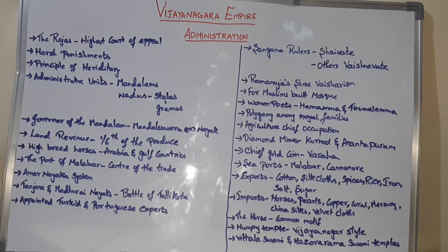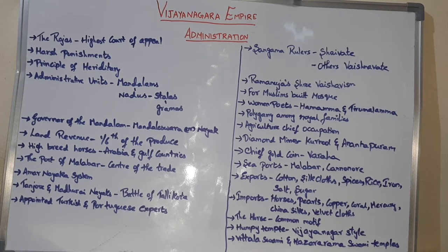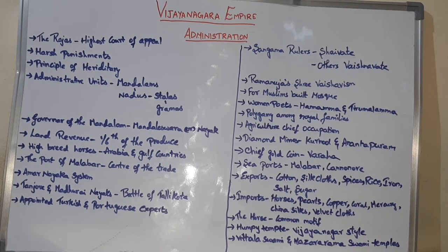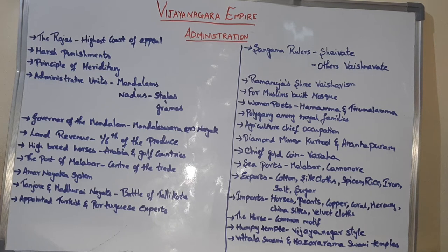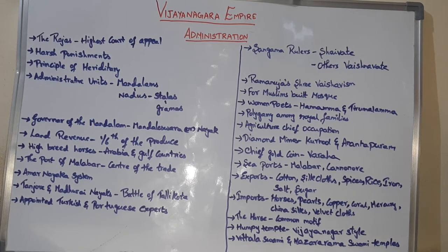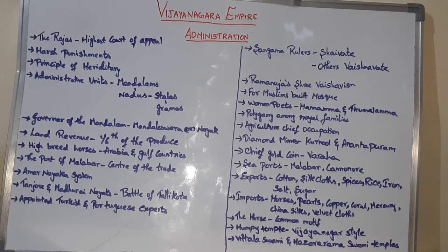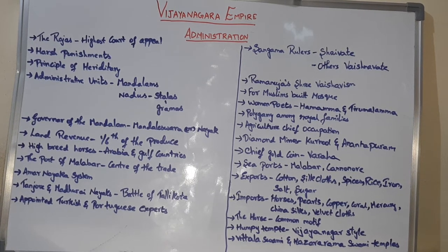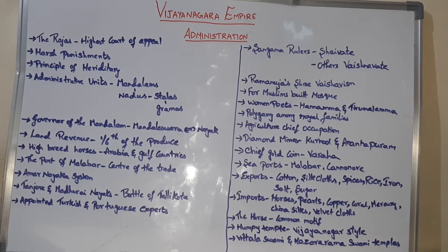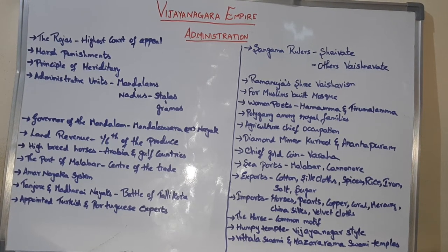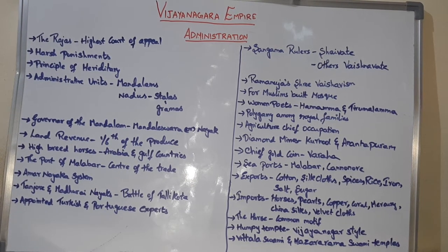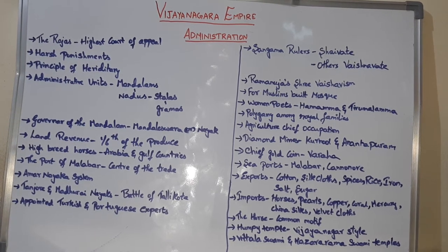The Raja enjoyed absolute authority in executive, judiciary, and legislative matters. The Raja was the highest court of appeal. In Vijayanagara, the rulers practiced harsh punishments.